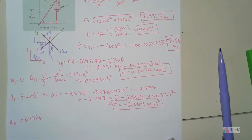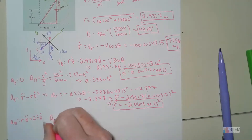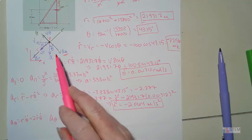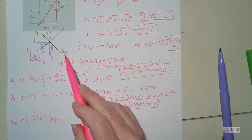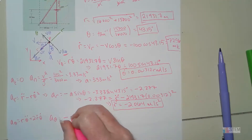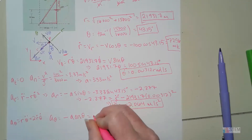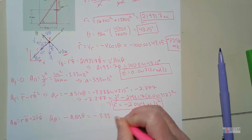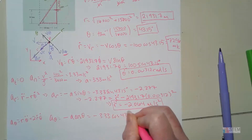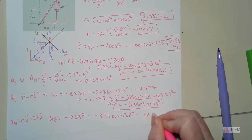Last thing we need is θ̈, which appears in the a_θ equation. The a_θ component from the diagram is in the negative θ direction: a_θ = −a cosθ. Plugging in: a_θ = −3.33 cos(43.15°) = −2.429 m/s².